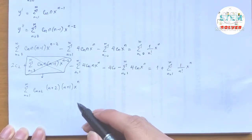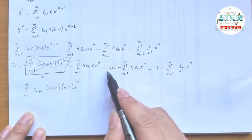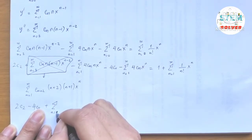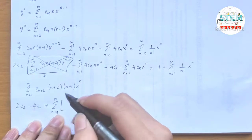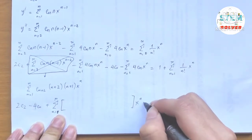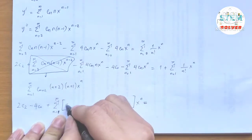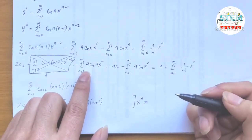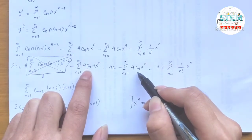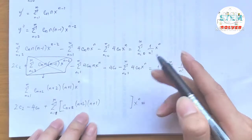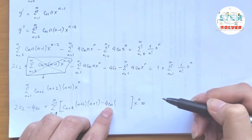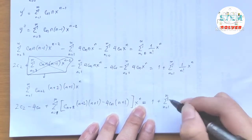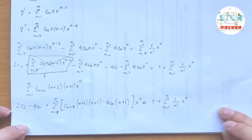Now combining like terms: the constant terms give 2c₂ minus 4c₀. Inside the power series from 1 to infinity, each term has a factor of x to the n in common. The coefficient is c_{n+2} · (n+2) · (n+1) minus 4 c_n · (n+1), which factors as (n+1) times [c_{n+2} · (n+2) minus 4 c_n]. On the right side, the constant term is 1 and the series is from 1 to infinity of x to the n over n factorial.